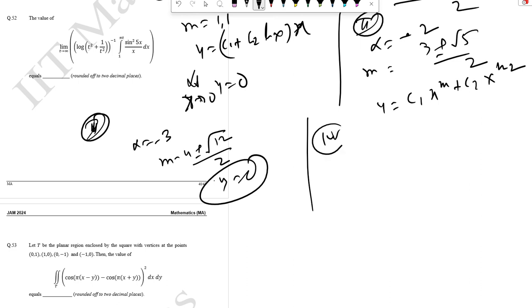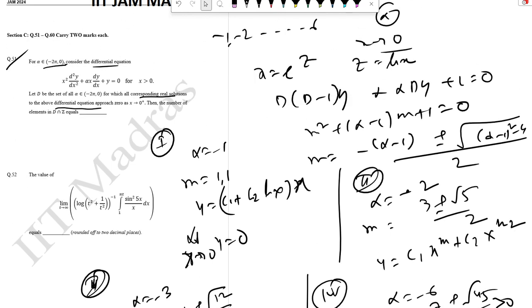Case 4: alpha equal to minus 6. m equal to 7 plus minus root 45 by 2, which is greater than 0. This will also be 0. So ultimately, this value will be 6. So 6 is the answer.